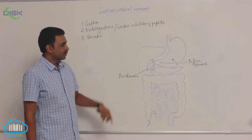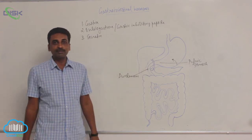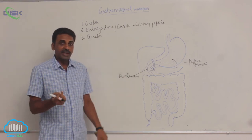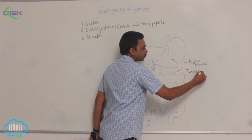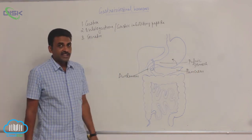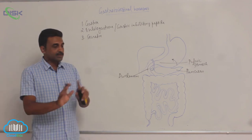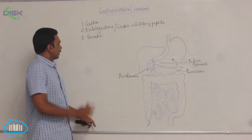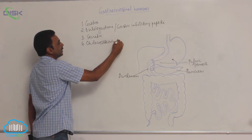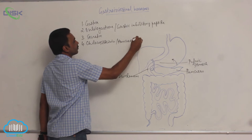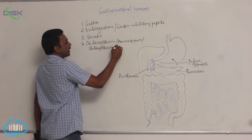Secretin is a hormone that acts directly on the pancreas — specifically on the centroacinar cells present inside the pancreas. Secretin is also produced from the wall of the duodenum. Under the influence of secretin, the pancreas produces mucus and bicarbonates. The next hormone is cholecystokinin, also called the cholecystokinin-pancreozymin complex.